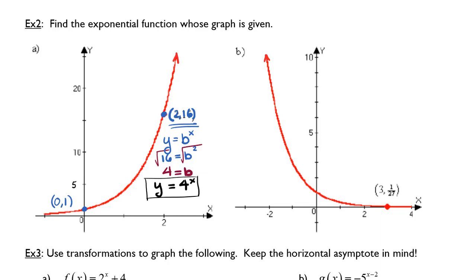Now let's do a similar process for example 2b. Again, the function is approaching the x-axis, which means it has not been shifted up or down. My coordinate point is listed as 3, 1 over 27. The curve again appears to be crossing the y-axis at 0, 1.